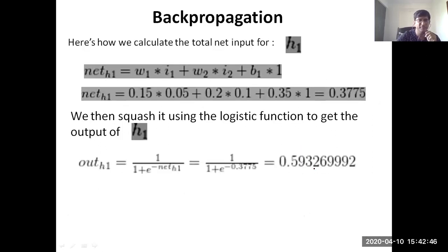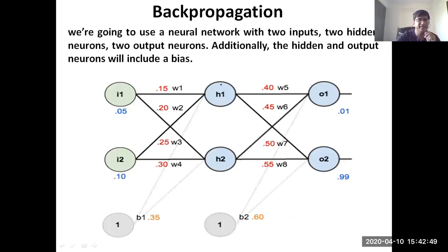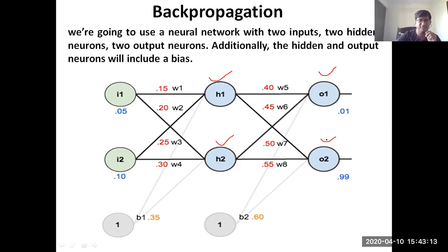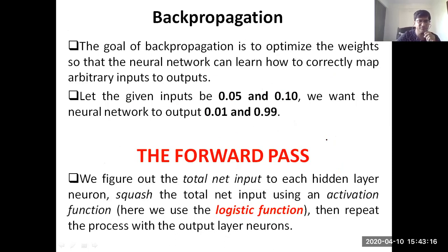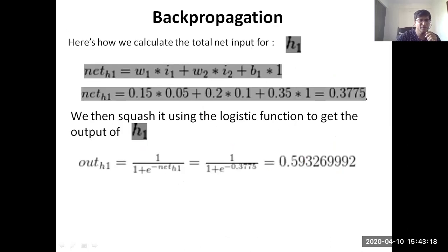The first part of the forward pass is to calculate the activation input for the hidden units and the corresponding output for those hidden units. The output of both hidden units then becomes the input for the output units, and we calculate the output for o1 and o2. That marks the end of the forward phase, also called the forward pass.